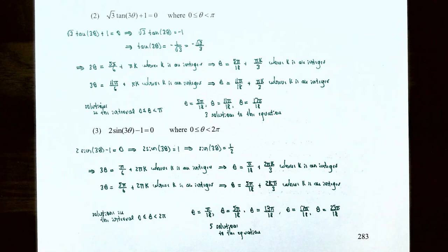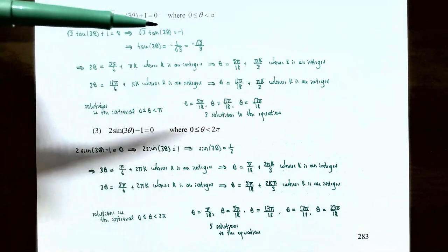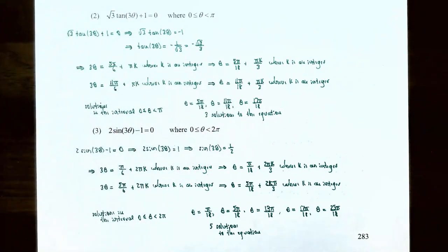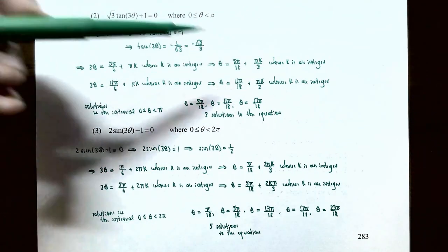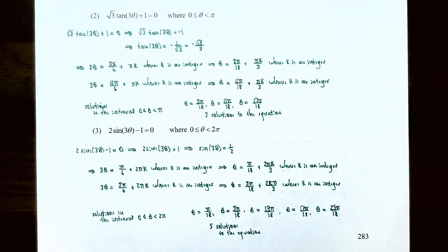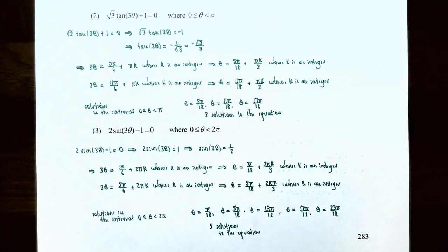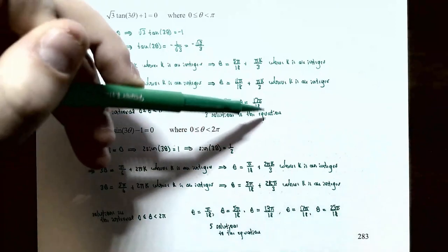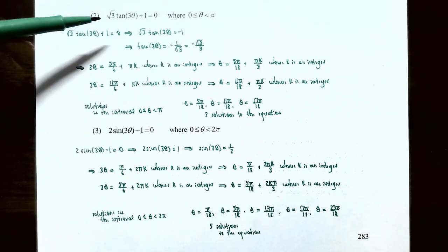For k equals zero: theta equals five pi over eighteen and theta equals eleven pi over eighteen. For k equals one: five pi over eighteen plus pi over three gives eleven pi over eighteen (already found), and eleven pi over eighteen plus pi over three gives seventeen pi over eighteen. The three solutions between zero and pi are theta equals five pi over eighteen, eleven pi over eighteen, and seventeen pi over eighteen.